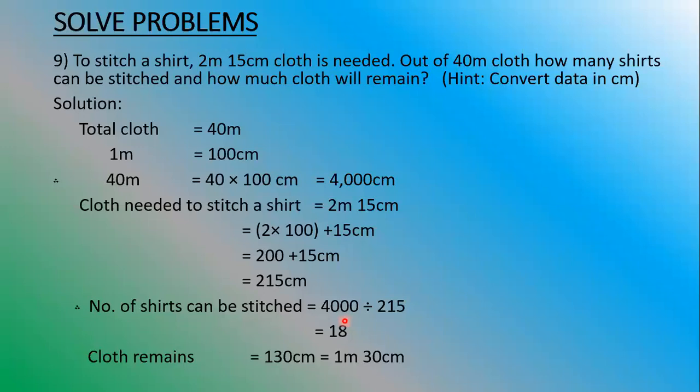So 18 is the quotient when we divide 4000 by 215. That 18 is the number of shirts that can be stitched. The remainder is 130 — that is the measurement of cloth left. Cloth remaining equals 130 centimeters.